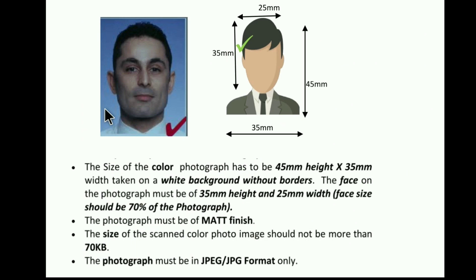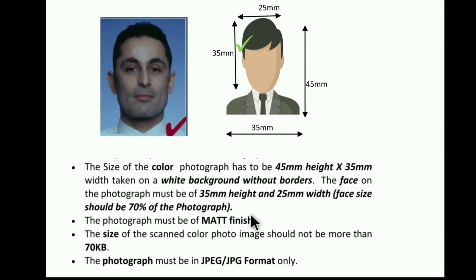The first document is the Applicant's Photograph. I have seen a lot of students who had their application rejected just because of their photograph. The photo must be in color, 45 mm height, 35 mm width, with a white background and no borders at all. The face should be more than 70% of the photo. The photo must be in matte finish — it should not be too shiny or glossy. The scanned color photo must be 70 KB or less. I will put a link in the description of a website that will help you compress image sizes. The photo must be in JPEG or JPG format.